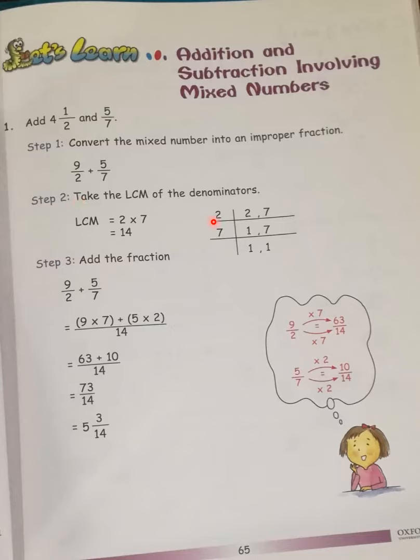Step number 2 is take the LCM of the denominators. I have told you before that we have to take the LCM of the denominators when we are going to solve fractions. Now for 2 and 7, we start with the smaller number. 2 times 1 is 2, 7 is left, so 7 times 1 is 7. The LCM of 2 and 7 is 14. 2 multiplied by 7 is 14.